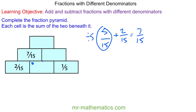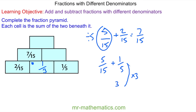Five fifteenths can be simplified by dividing both by five: five divided by five is one, and fifteen divided by five is three, so this is one third. Now we have one third, which is five fifteenths, plus one fifth. We write one fifth as three fifteenths using the common denominator of fifteen, and add it to five fifteenths, giving us eight fifteenths in total.